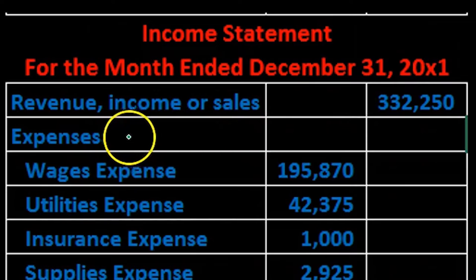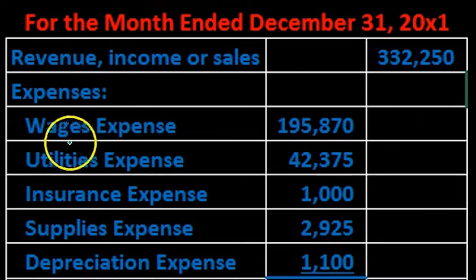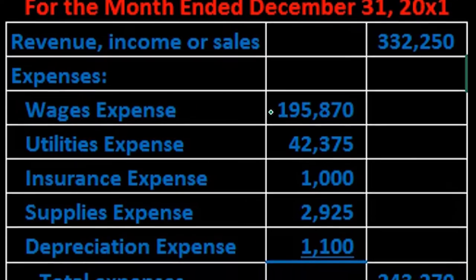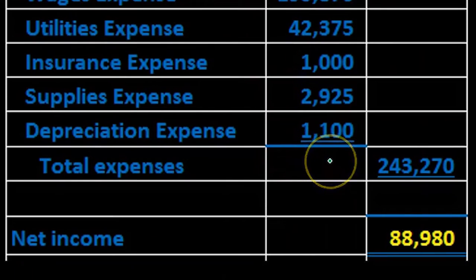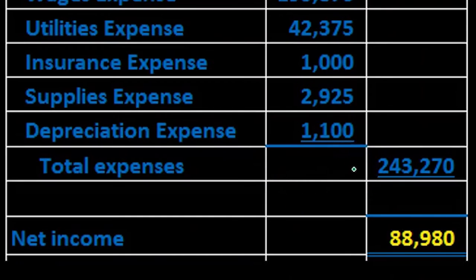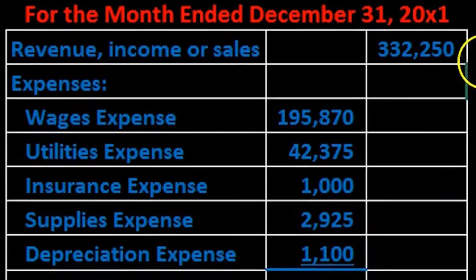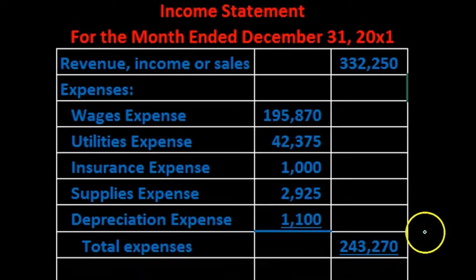Anything in the left (inner) column is a subcategory listing, and the right (outer) column holds the subcategory total or the overall total. For expenses, we write 'Expenses:' and indent all the expense accounts in the inner column — not because it's a debit, but because they will be grouped and summed up into the outer column. Then we subtract total expenses from revenue to get net income, working with only one column at a time.